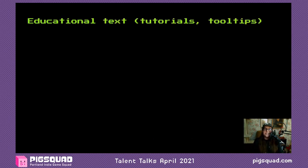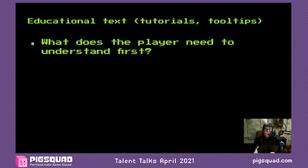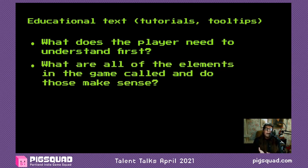Let's talk about educational text — tutorials, tooltips. Ask yourself two questions: what does the player need to understand first, and what are all the elements in the game called and do those make sense? Order of operations is really important, especially with complex subjects — put basic stuff first and build up to complexity so players don't get lost. And every element needs a name that makes sense. Now, you're not always sharpening towards clarity — if you want part of your game to unnerve or confuse the player, that's legitimate too, but you need to know what you're doing.